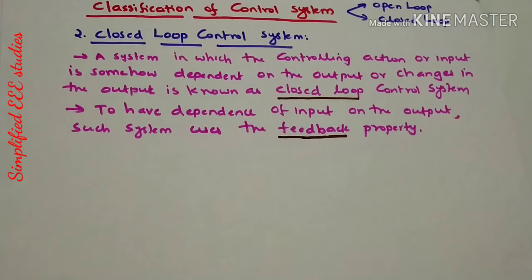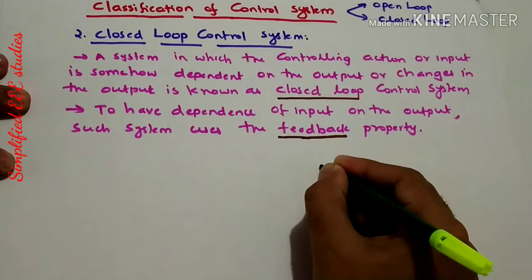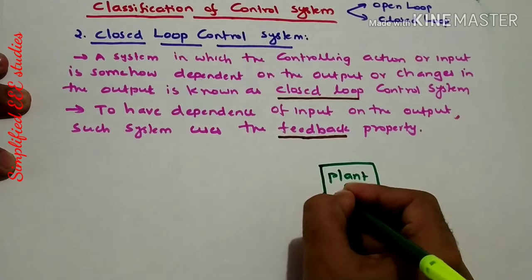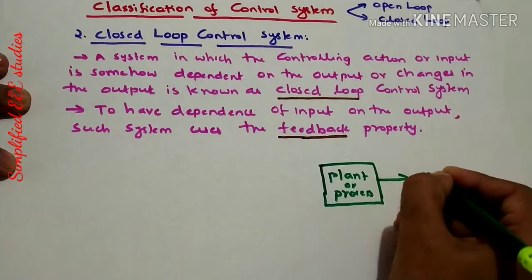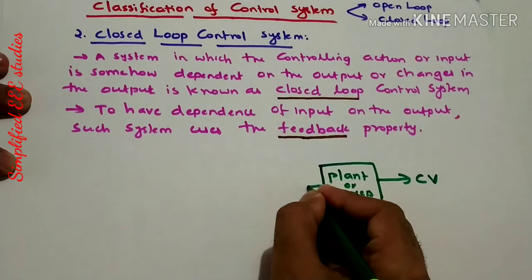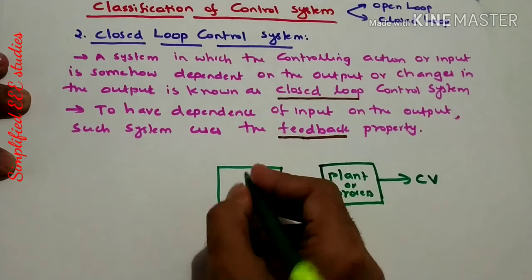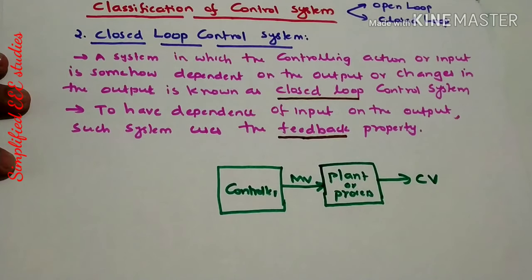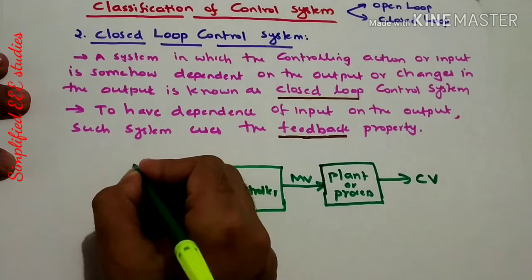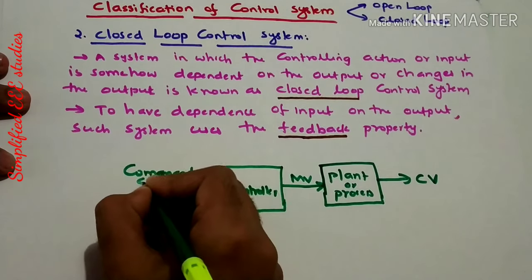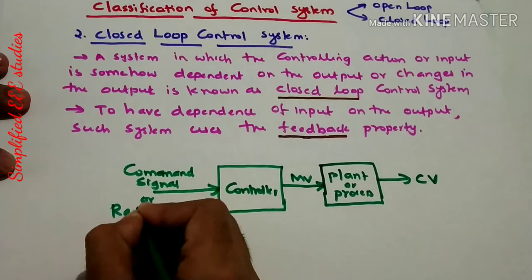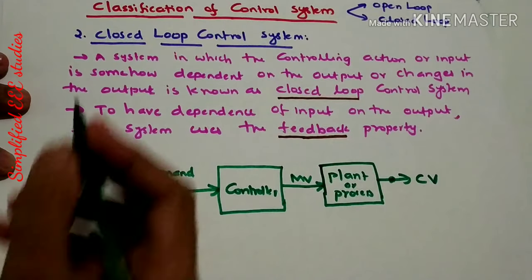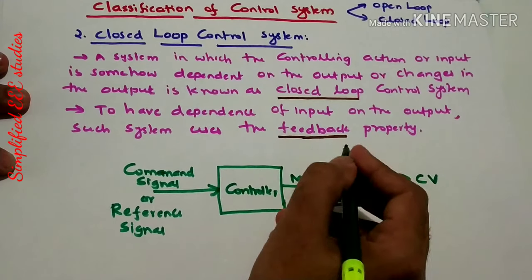Let us draw one simple block diagram of closed loop control system. We have a plant or process, and this will be the controlled variable. We have a controller, and the output of the controller will be the manipulated variable, which we already studied in the last sessions. Then we have a reference or command signal, also called set point.